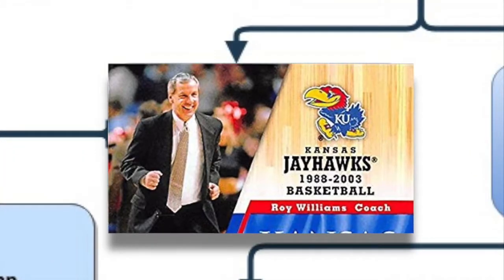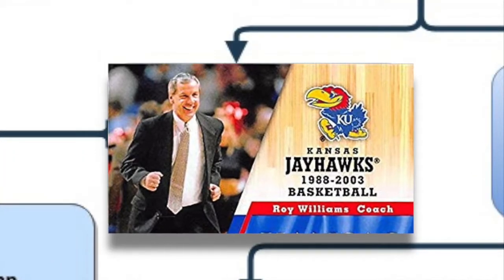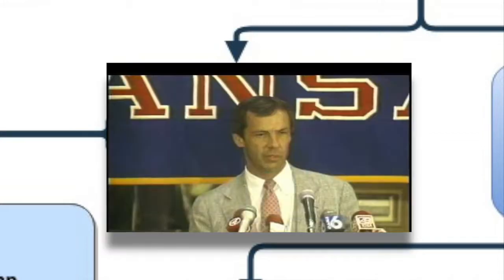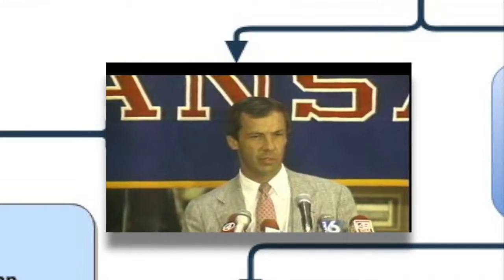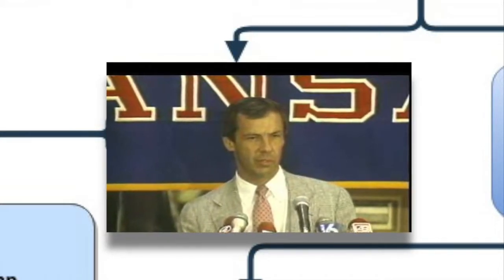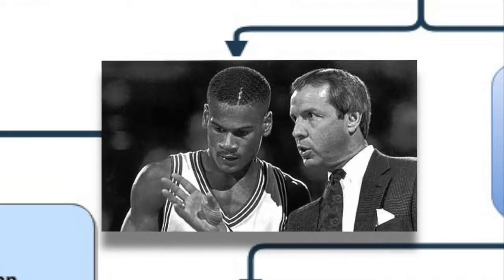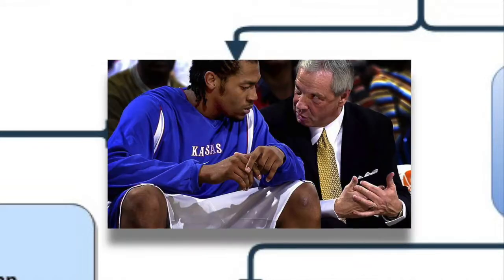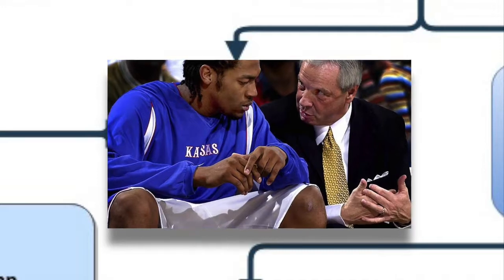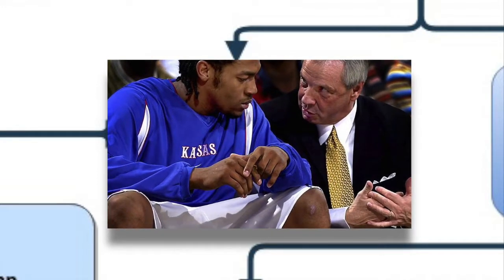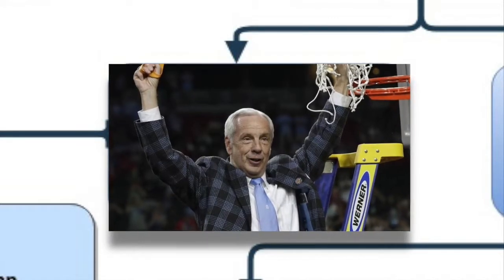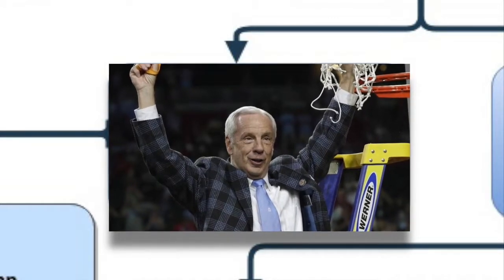Roy Williams was an assistant coach for Dean Smith until he got the head coaching job at Dean Smith's alma mater, Kansas, and then getting the head coaching job at North Carolina a few years after Dean Smith's retirement, where he is still coaching to this day. In his time at KU, he totaled 418 wins, had two national title appearances, and four Final Four appearances.